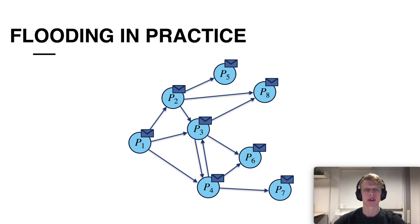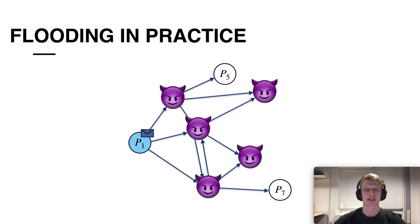However, it's not difficult to see that if a large fraction of the parties are actually dishonest then either P1 has to send to really many parties or otherwise the protocol will not work. In this case P5 and P7 will not receive the message.